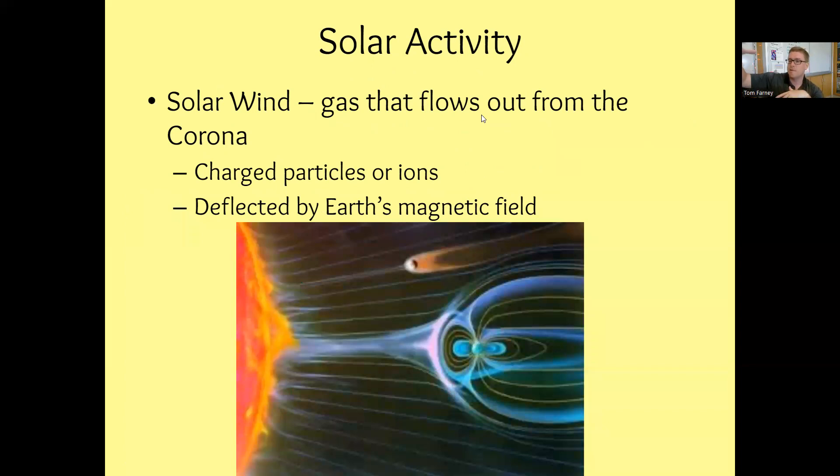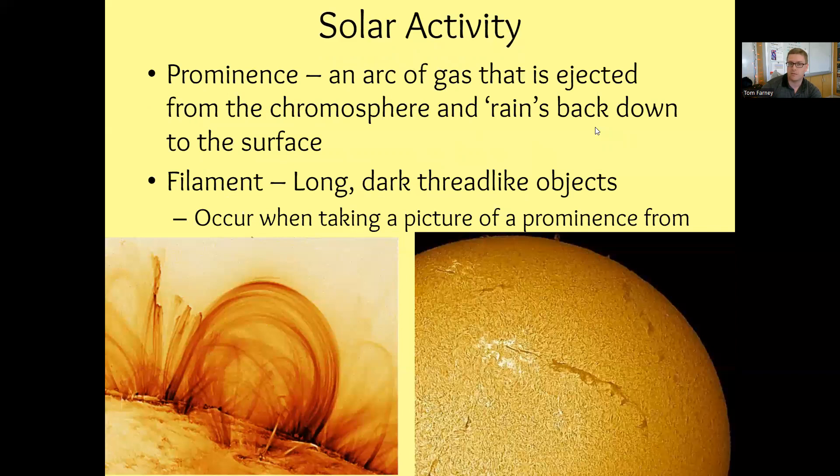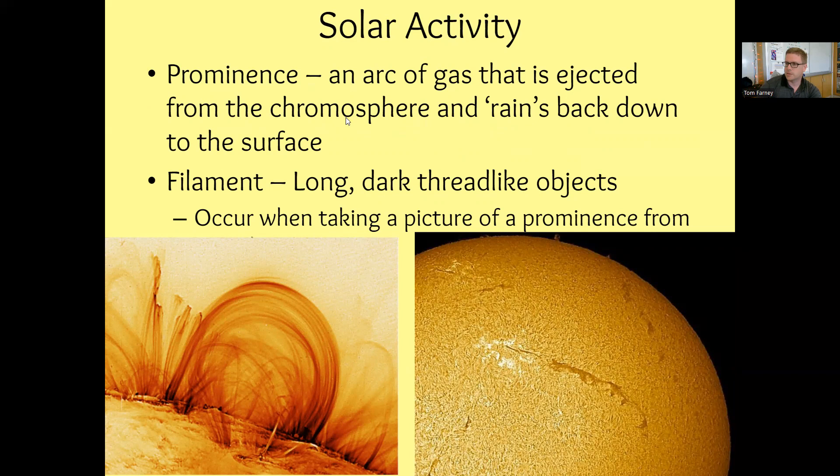Because of our magnetic field, our planet helps to protect us from a lot of these solar winds so that way we don't get damaged here on the surface. We just see a lot of that aurora borealis going on because of our ionosphere protecting us from those charged particles. So thank you very much Earth's magnetic field for that.